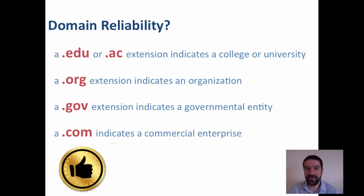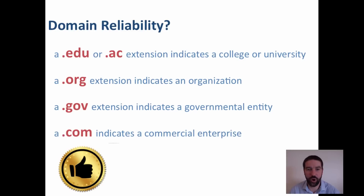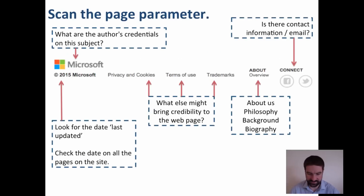Domain reliability is another useful indicator. Edu or ac indicates a college or university. Org is normally an organisation. Gov is normally a government entity and com is normally a commercial enterprise. The type of domain can sometimes help us assess the reliability of the content.